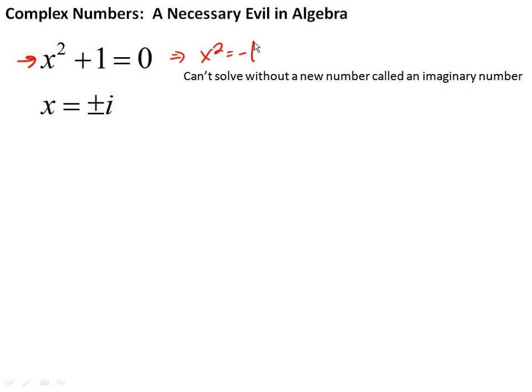One day some bright person realized, if I make up a new number called an imaginary number where i squared equals negative 1, then the solution to this equation becomes quite simple. It's x equals plus or minus i, and all I need is this new type of number. The choice of imaginary number was really unfortunate, but that's what we call it, so deal with it.